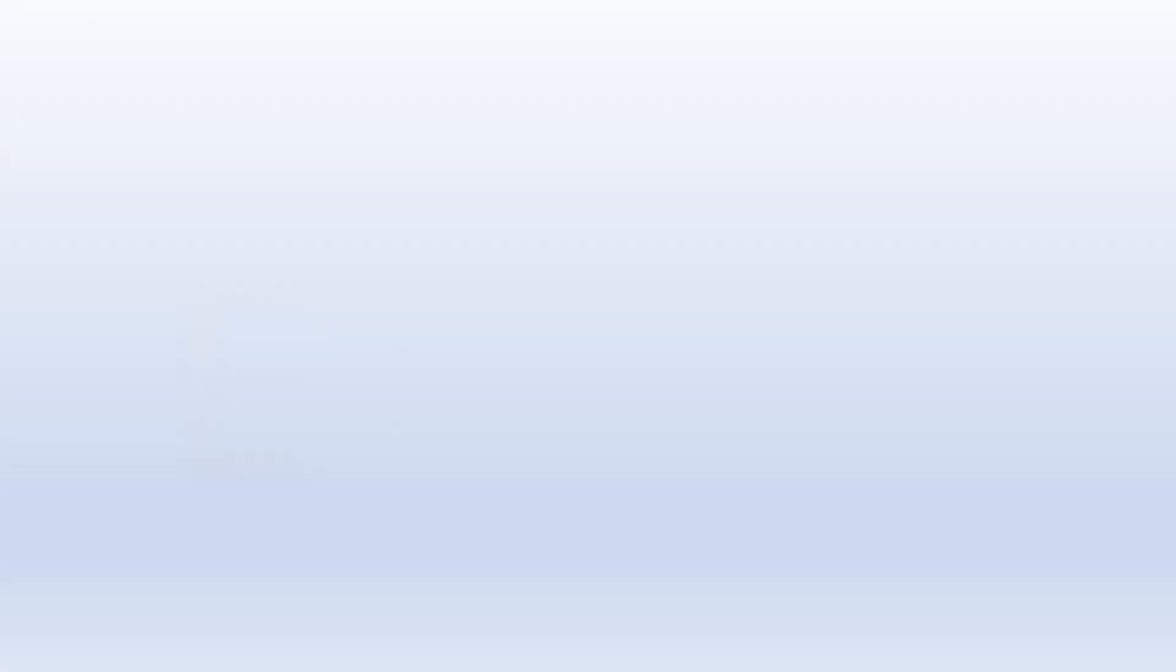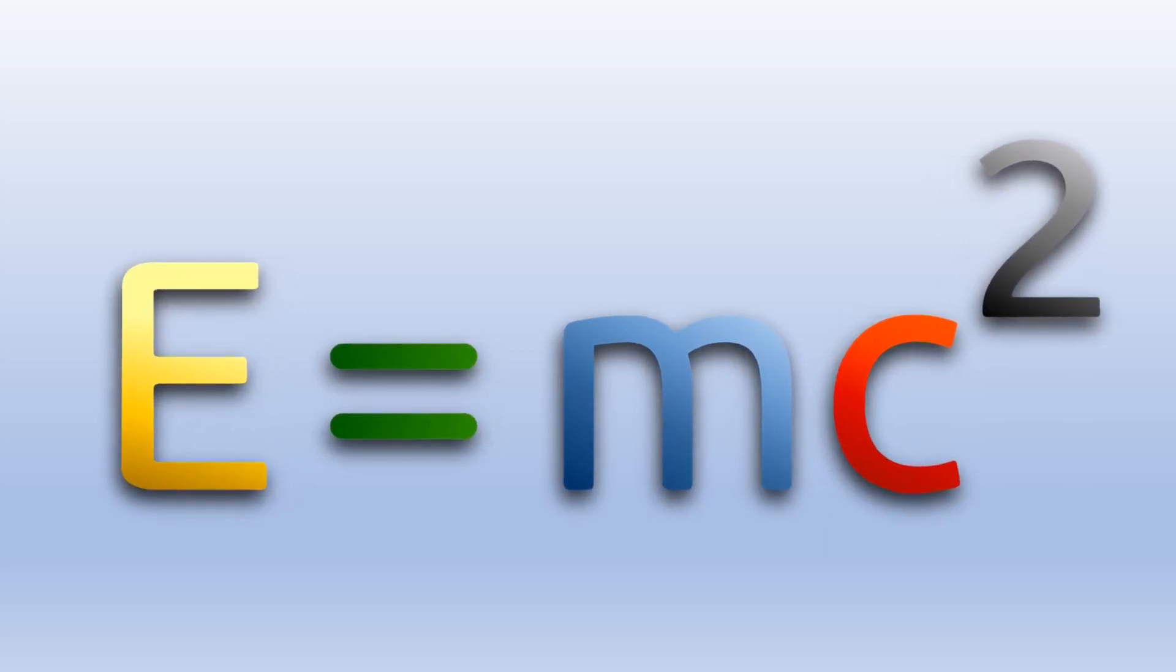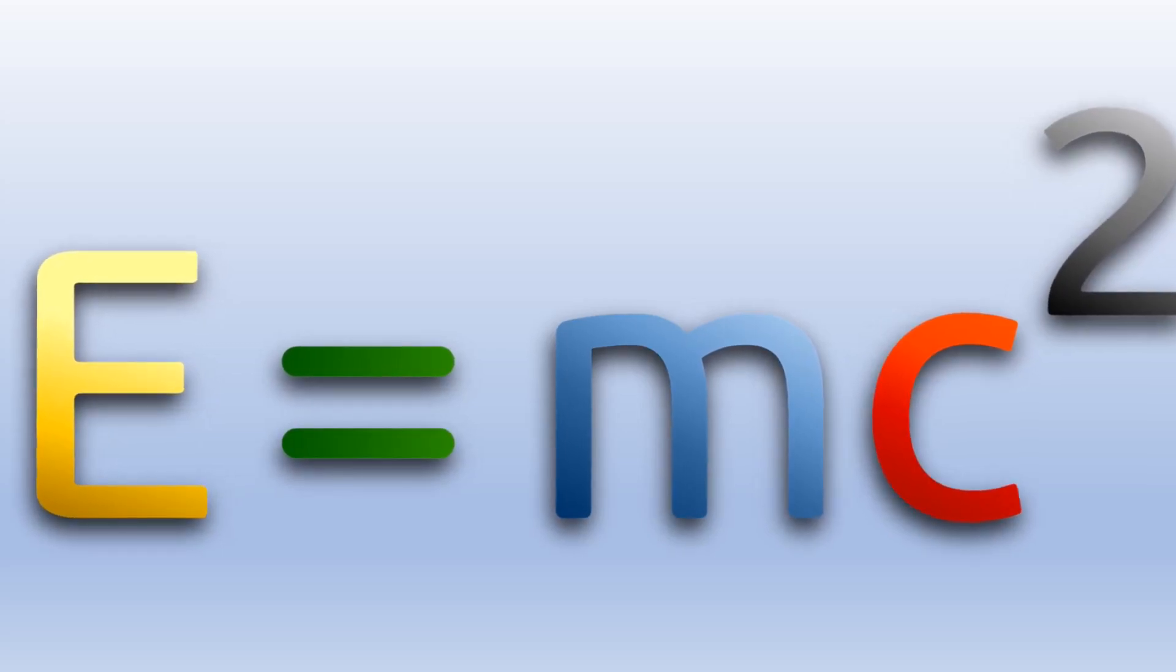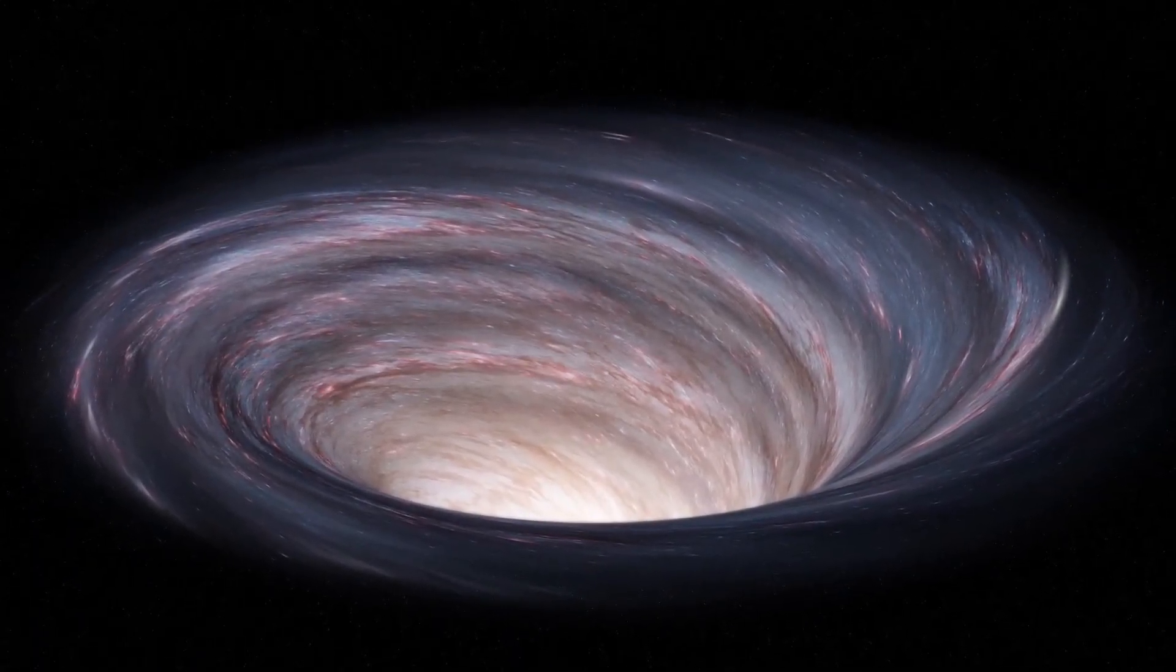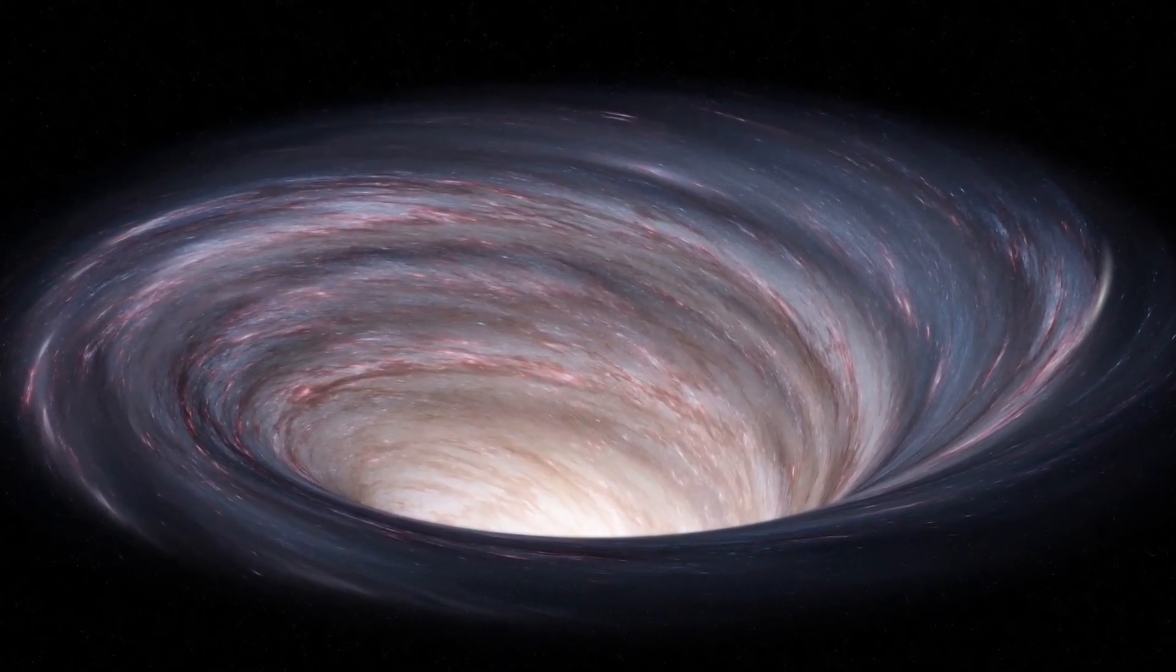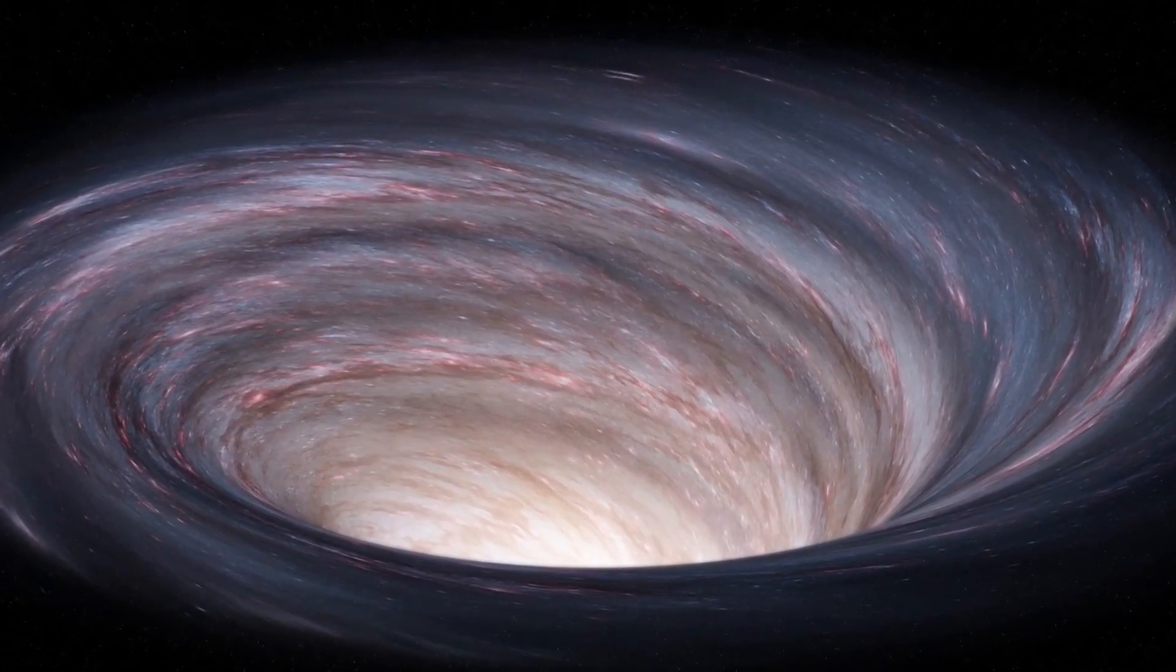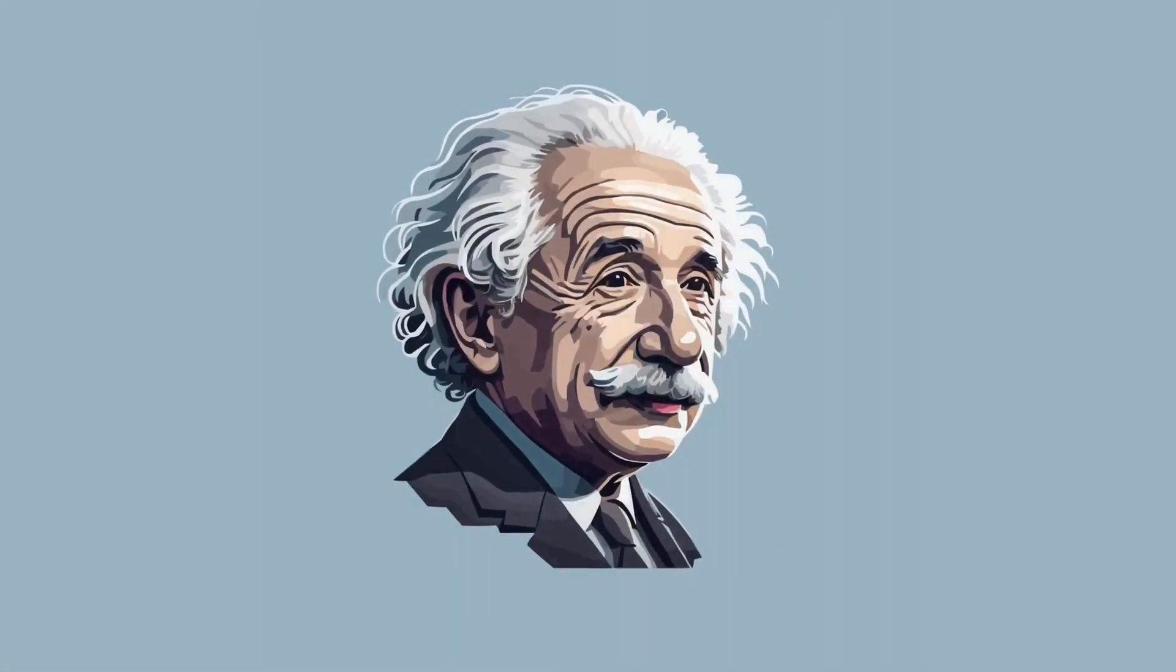Central to general relativity is Einstein's interpretation of gravity as the curvature of time and space around material objects. Massive objects, such as planets or stars, bend spacetime around them, creating curvature and thus affecting the path of motion of other bodies around them. This curvature of space-time is described using complex mathematical equations. General relativity not only provides a new understanding of gravity, but also explains a variety of phenomena such as black holes, cosmological models of the universe, and a more general view of the large structures of the universe.